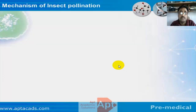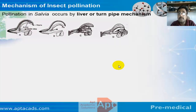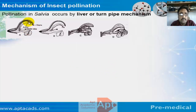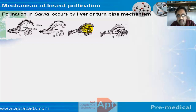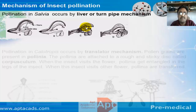In insect pollination, one typical example is salvia, which uses a lever or turnpike mechanism. The stigma is at the top, the anther is connected, and there is a sterile lobe. When an insect sits on the flower, it acts as a lever and bends — the stigma then touches the back of the insect. Whatever pollen grains are present on the back of the insect are transferred, and this is how pollination is effected in salvia.